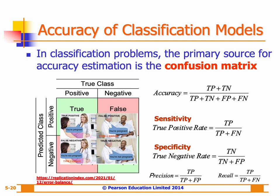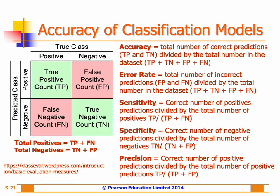Once the confusion matrix is constructed, evaluation metrics can be easily calculated, such as accuracy, sensitivity, specificity, precision, and recall, which are formally defined from the confusion matrix values.